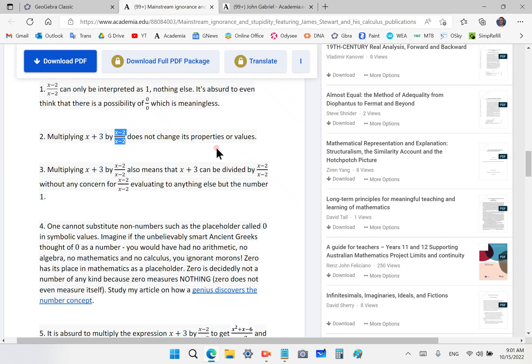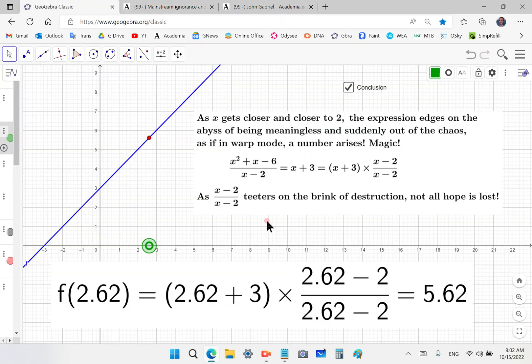And of course, you cannot substitute non numbers such as the placeholder zero. If you want solid mathematics, in fact, you wouldn't have fractional arithmetic if the Greeks accepted zero. Do you understand that? All your arithmetic, your fraction arithmetic comes from dealing with magnitudes in geometry as the Greeks revealed to the world. The ancient Greeks, not the morons of today. The ancient Greeks were unbelievably smart and they revealed these things to you.